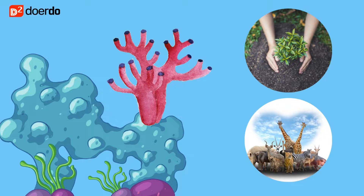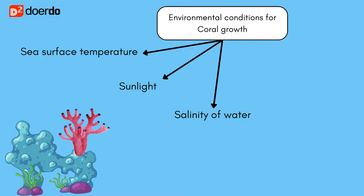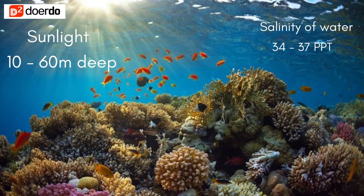Like other plants and animals, coral reefs too need favorable conditions to grow. This includes optimum levels of sea surface temperature, sunlight, salinity of water, and oxygen content. They thrive well in clear, saline water between 10 and 60 meters deep, where they get sufficient sunlight to encourage algae photosynthesis.